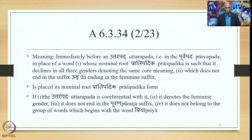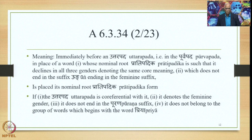To repeat: immediately before an Uttarapada, that is in the Purvapada — Uttarapade — in place of a word whose nominal root is such that it declines in all three genders denoting the same core meaning — Bhashita Pumskat — which does not end in the suffix Ung — Anung — ending in the feminine suffix — Striyaha — is placed its nominal root or Pratipadika form — Pumvat — if the Uttarapada is coreferential with it — Samanadhikarane — it denotes the feminine gender — Striyam — it does not end in the Purana suffix — Apurani — and it does not belong to the group of words beginning with Priya — Apriyadeshu.